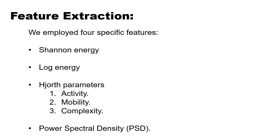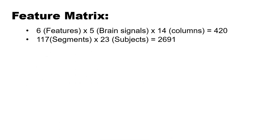For feature extraction, we employed specific features: Shannon energy, log energy, and Hjorth parameters — activity, mobility, and complexity — then we applied power spectral density. This gives us six features total. Since we have five brain signals and 14 channels, multiplying these gives a 420-column feature matrix. We had 117 segments per subject, so for 23 subjects we had 2,691 observations.